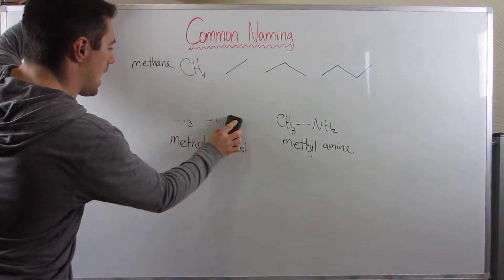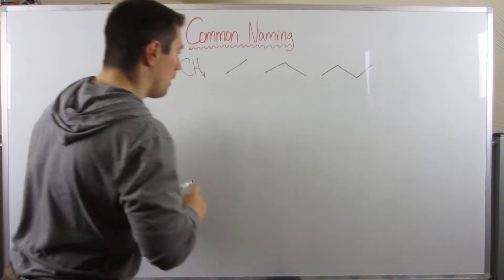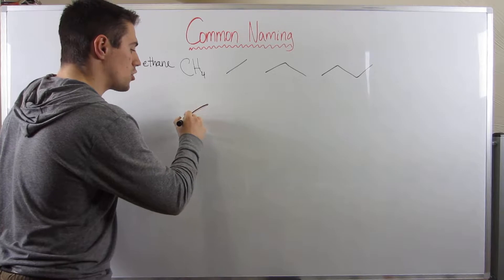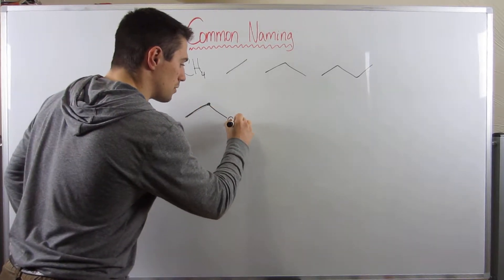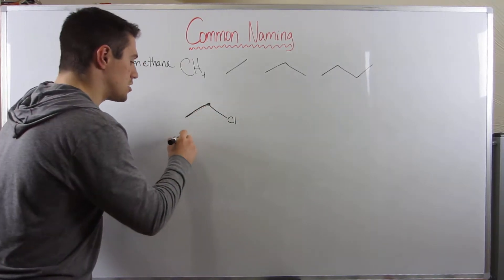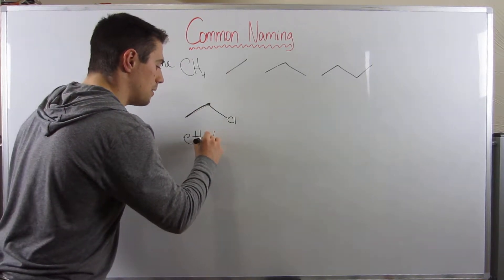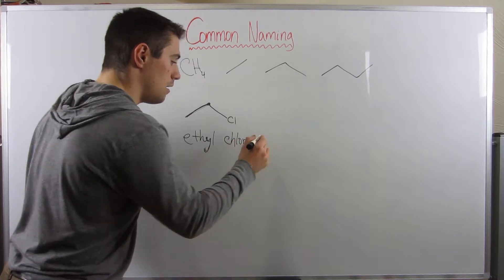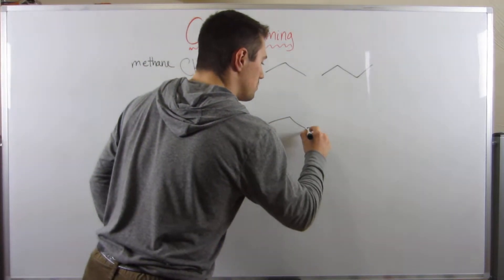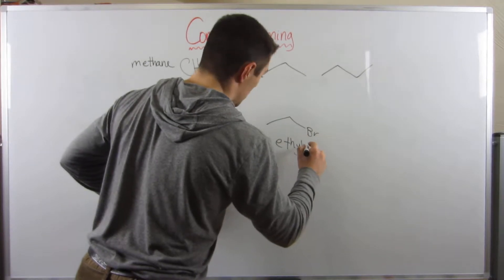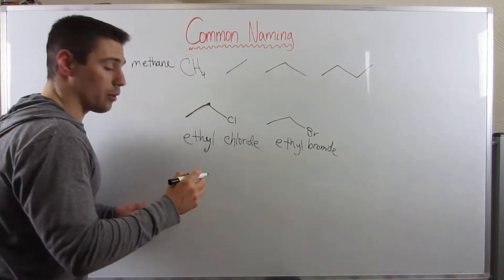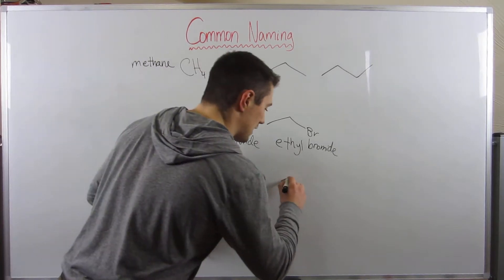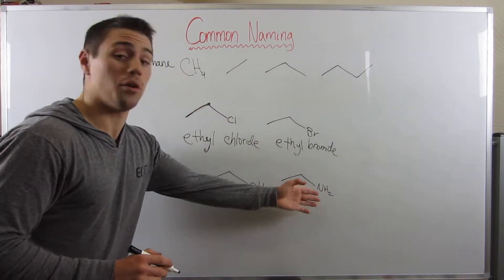Let's look at ethane — there's going to be a little twist at the end, but nothing difficult. If we have ethane and draw a bond from one carbon to chlorine, we're not adding an extra carbon, just bonding to chlorine. So this would be ethyl — drop the -ane, add -yl — ethyl chloride. Similarly, ethyl bromide. If I gave you ethanol, that's ethyl alcohol, and with NH2, ethyl amine.